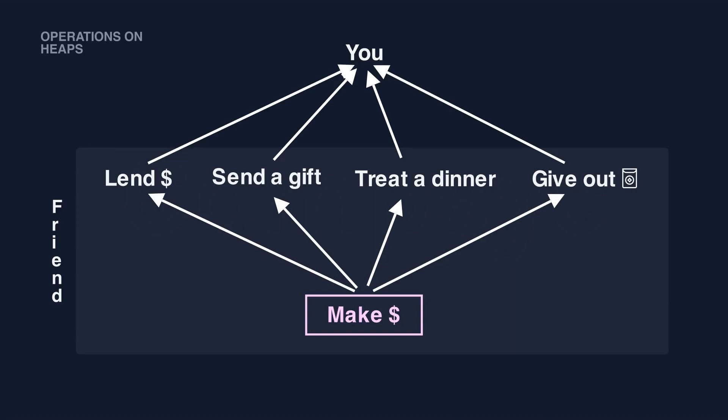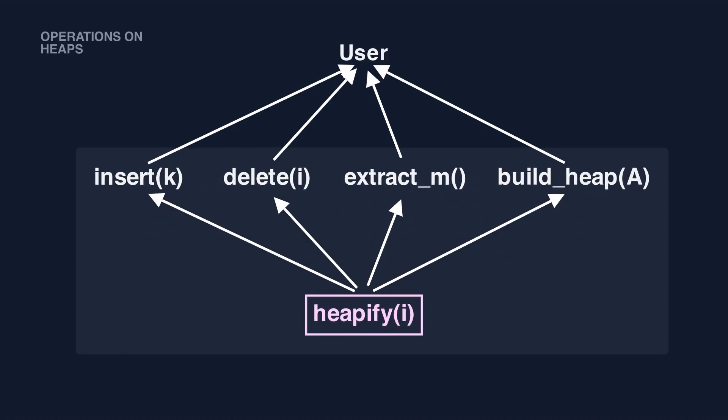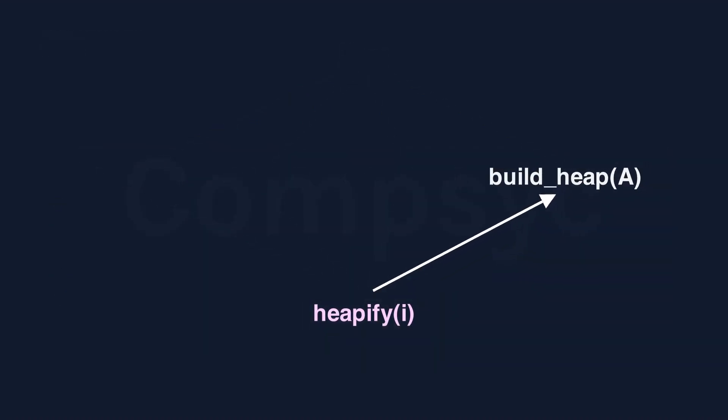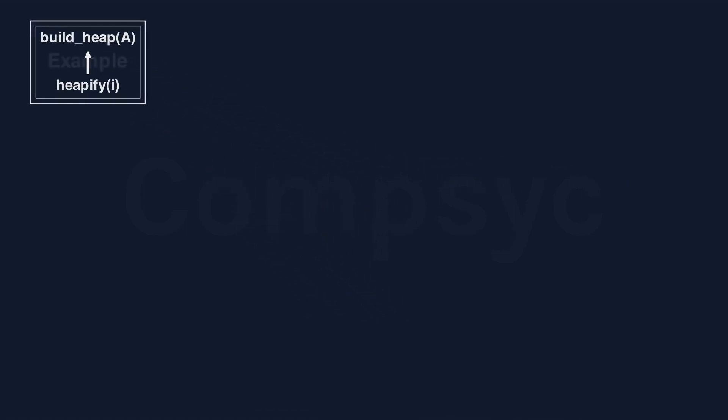If you imagine a heap to be one of your friends, your friend can lend you money, or send your gift, treat your dinner, or give out red envelopes to you. All of these are operations that your friend can offer. But in order to support all these operations, your friend has to do one thing, to make money. But you don't have to be exposed to this internal thing. All right, this is the relationship between operations. Now let's take build heap as an example, and you will understand how heapify supports other operations.